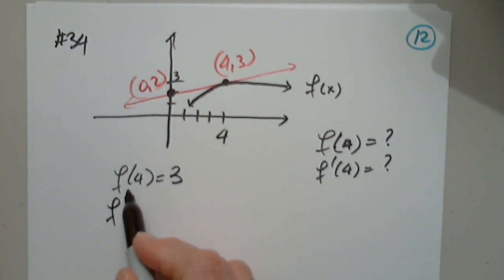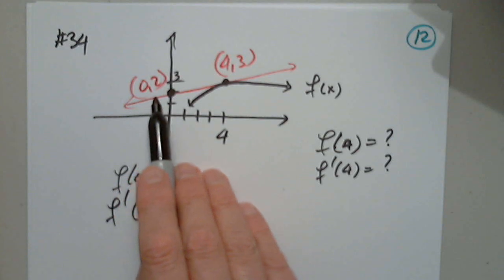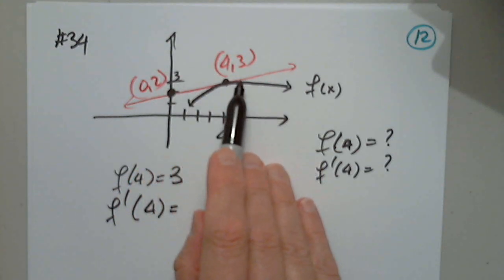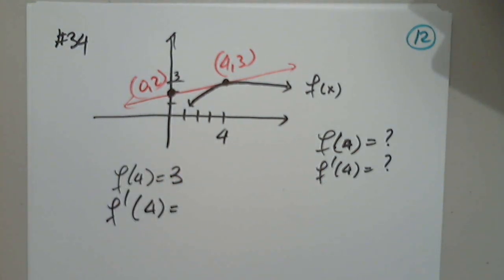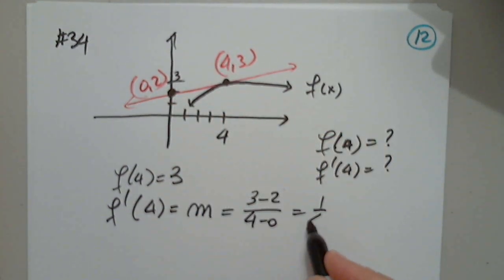Now we want to find f prime of 4, which is the slope of the tangent line at this point. Is there any possibility I can determine the slope of this line somehow? And if yes, how do I do it? Either the formula or just rise over run? Yes. Exactly. So I have two points. This is the slope, y2 minus y1 over x2 minus x1. So it's 1 fourth.